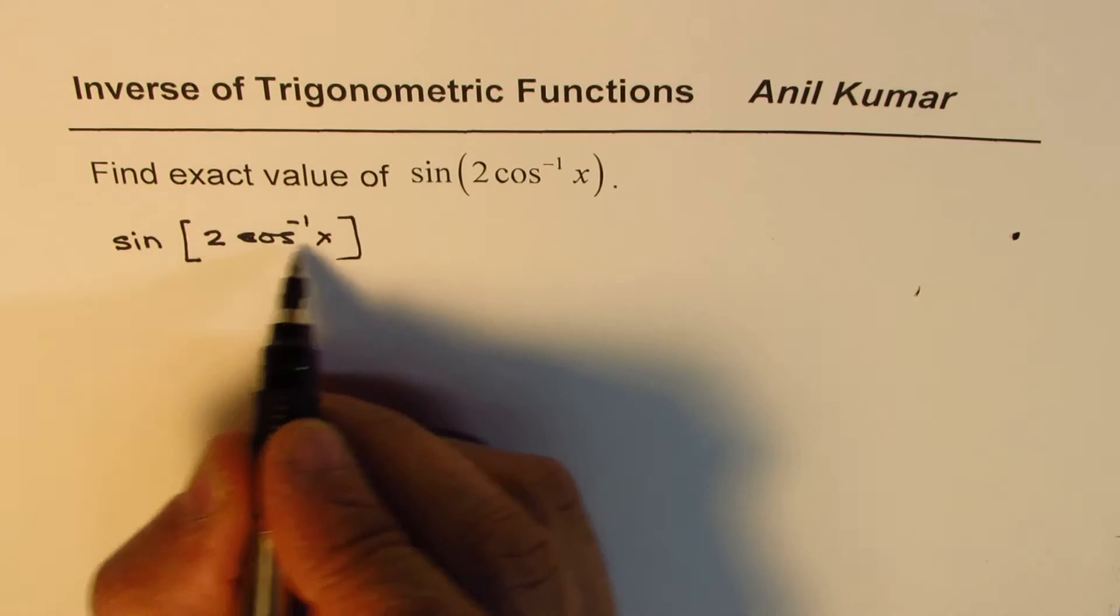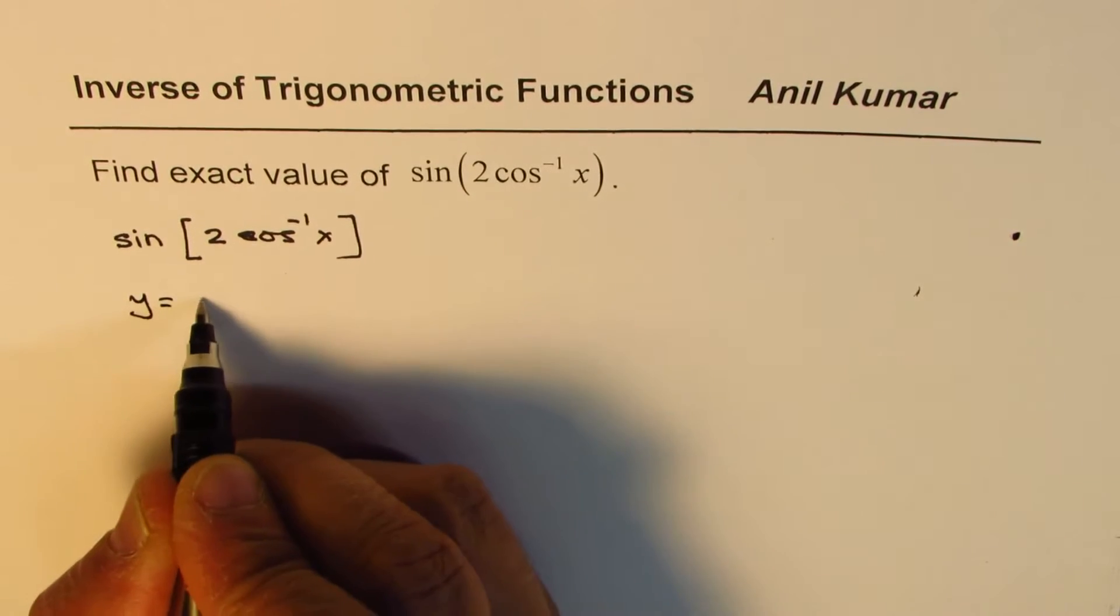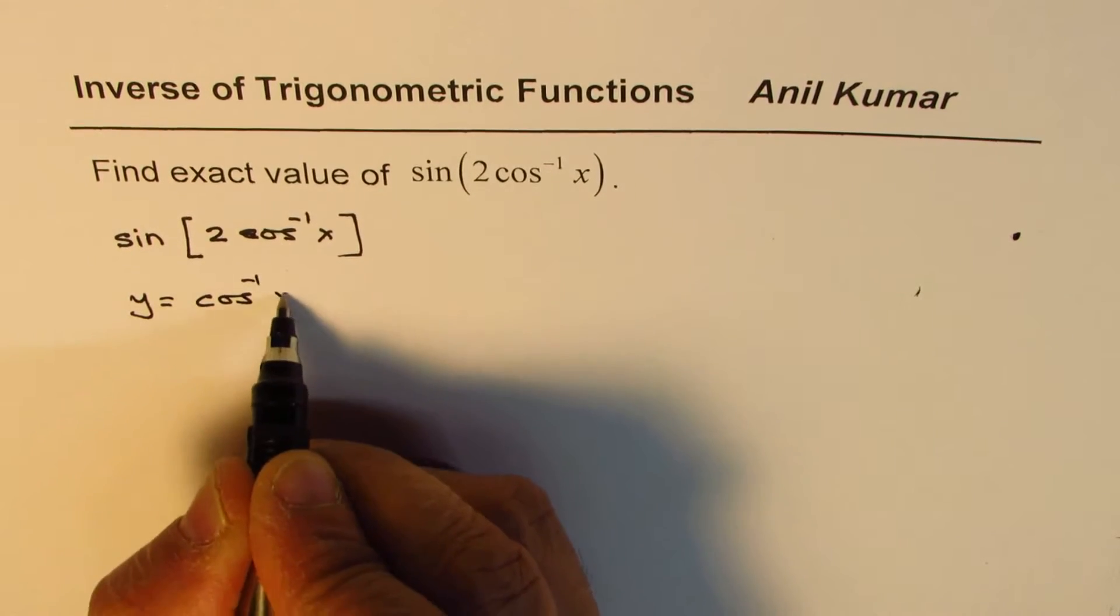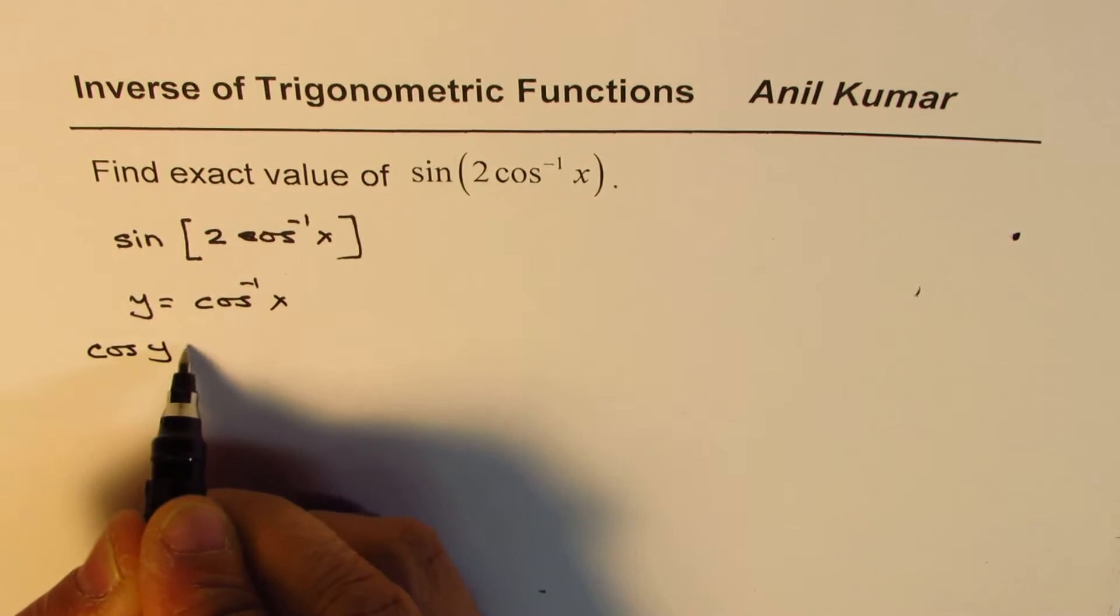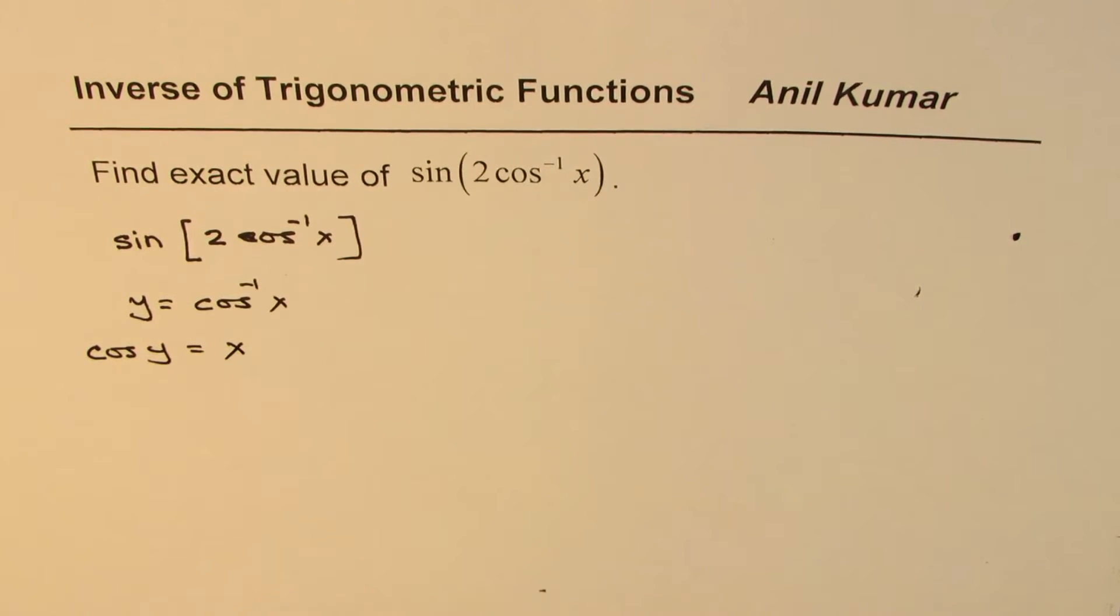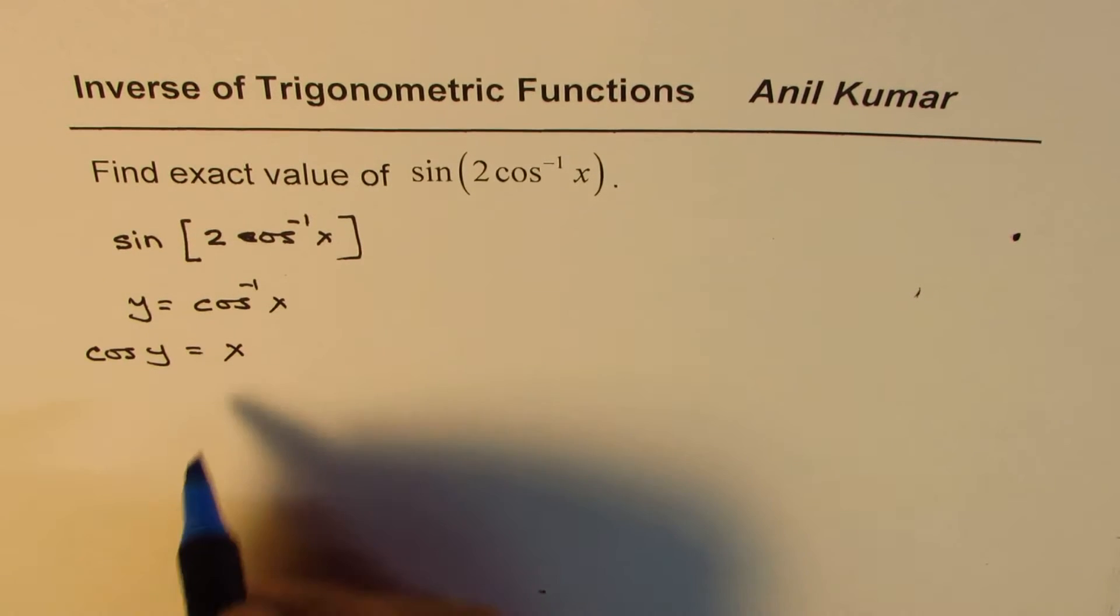Now what you can do is you can substitute y = cos⁻¹x, then cos y = x. So cos y = x. If I make a right triangle, let me make one first.